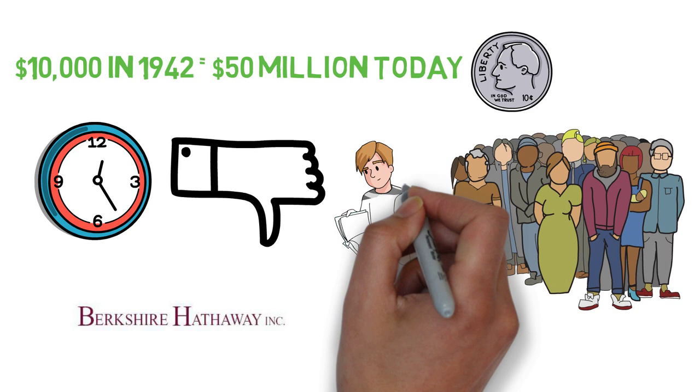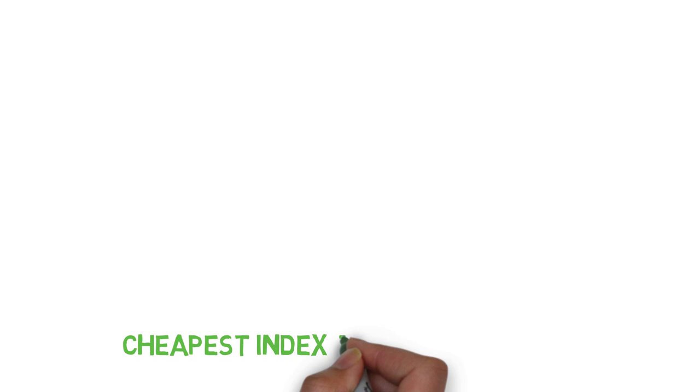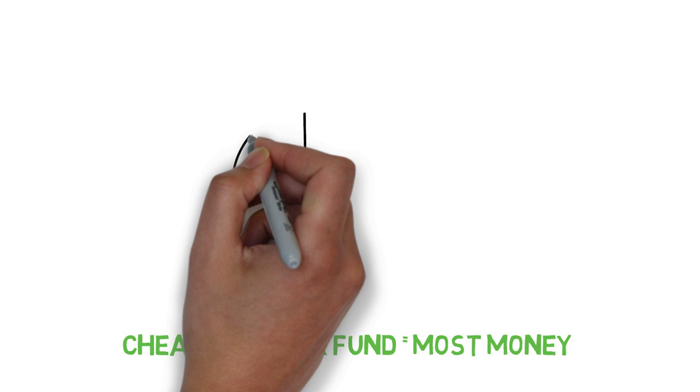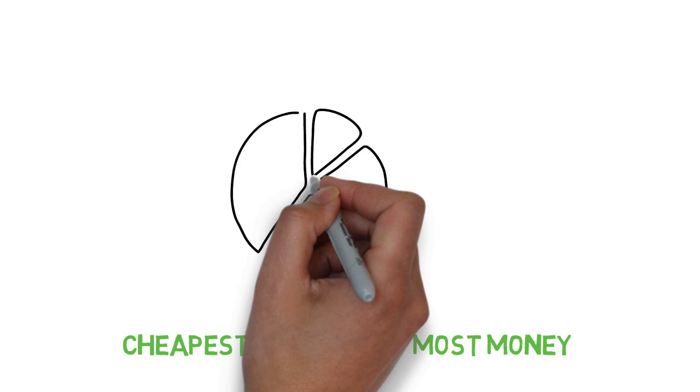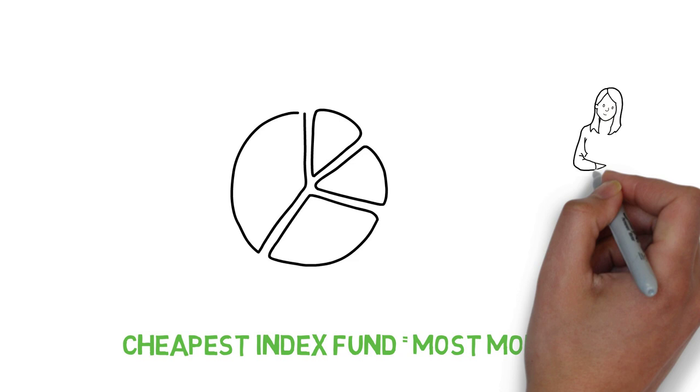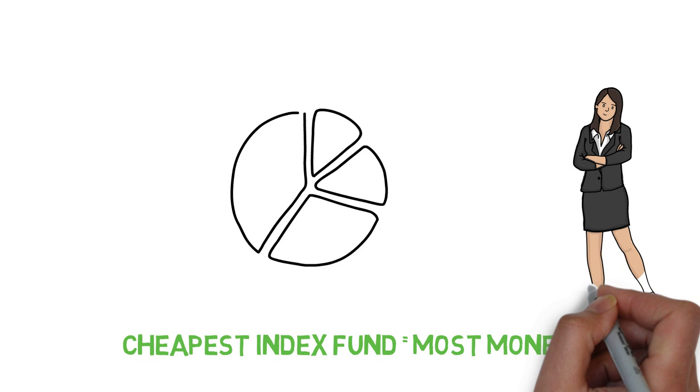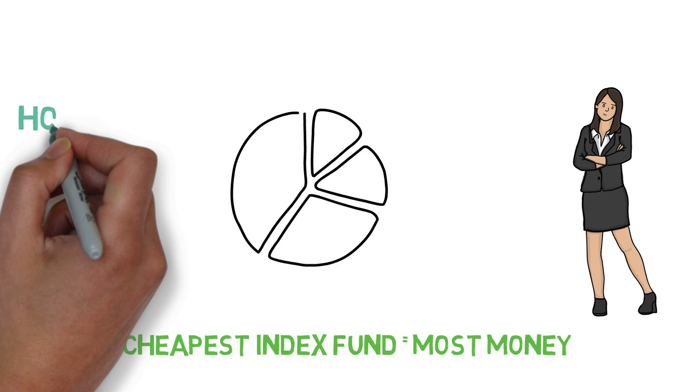Buying the cheapest index fund will make you the most money, in theory. It's easy to choose index funds based on their cost alone when compared to actively managed funds because an S&P 500 fund is the same with Vanguard, Fidelity, iShares, and other companies, whereas with an actively managed mutual fund, it's hard to compare based on price alone because so many variables go into determining future performance. There are many more factors that must be considered.